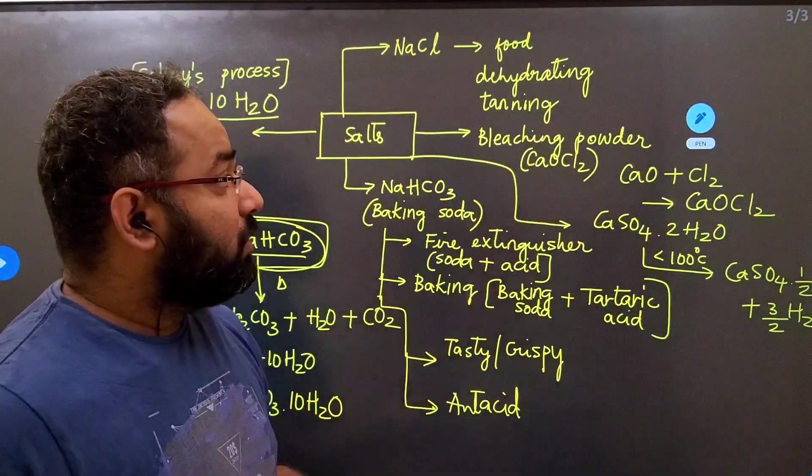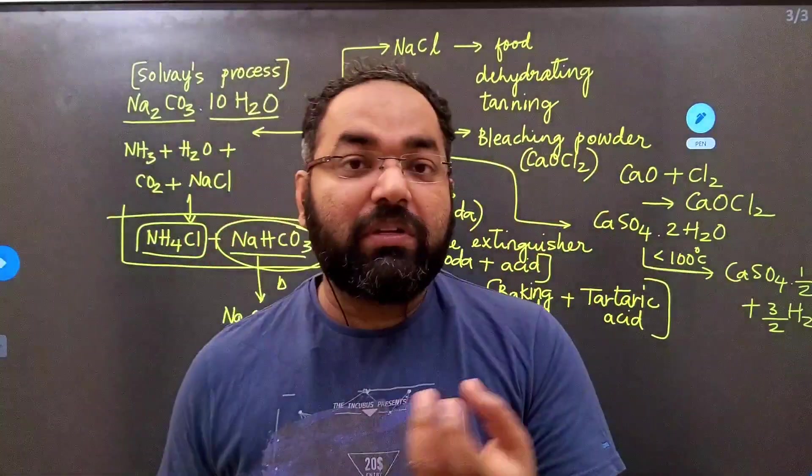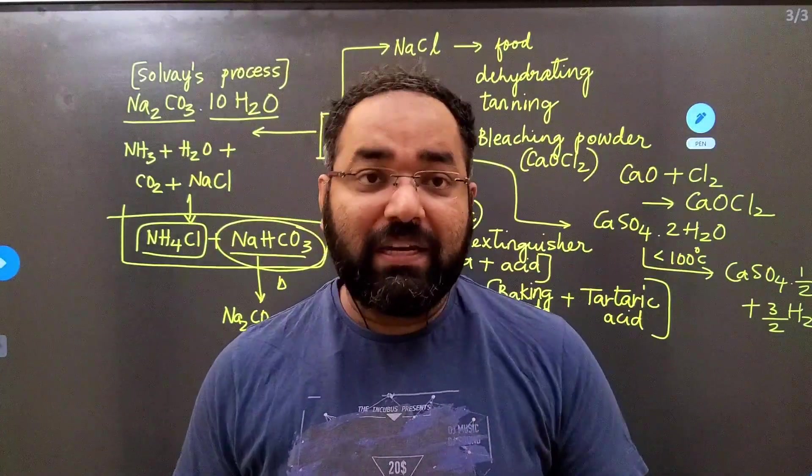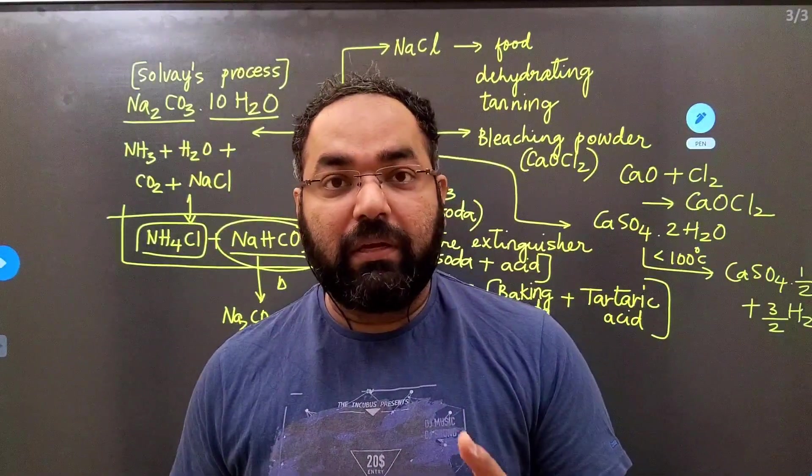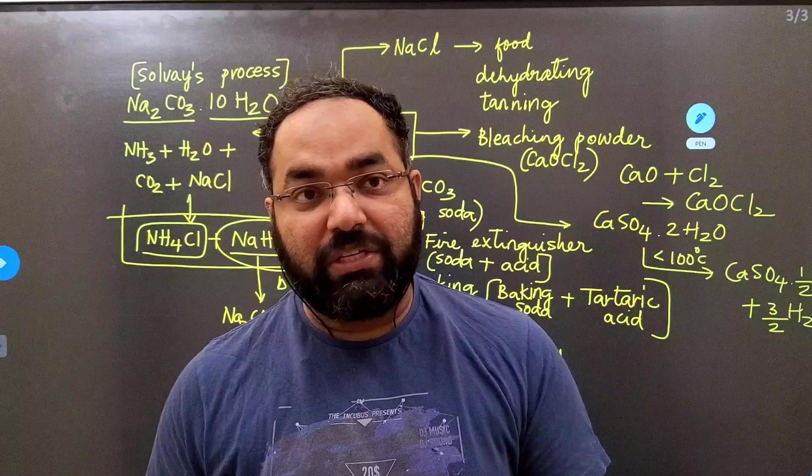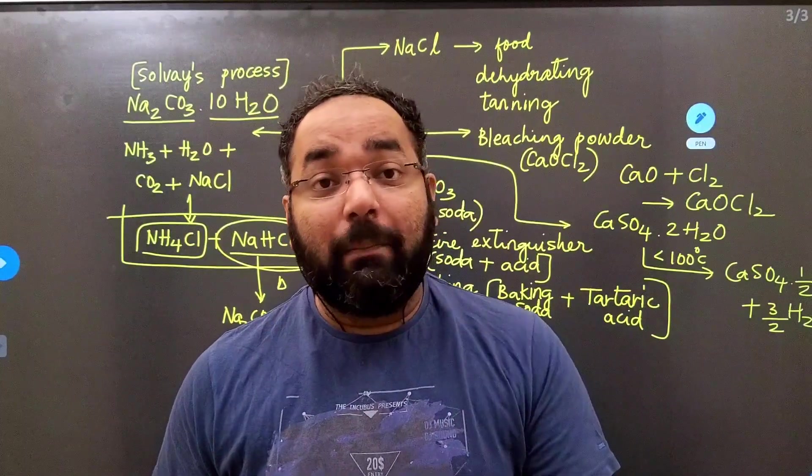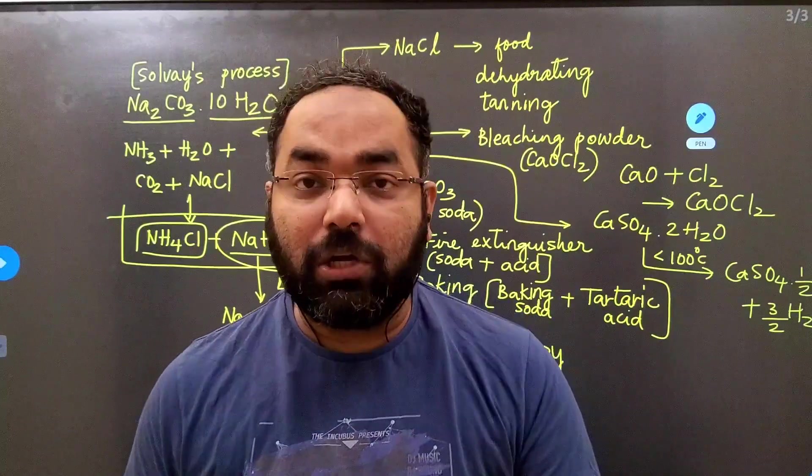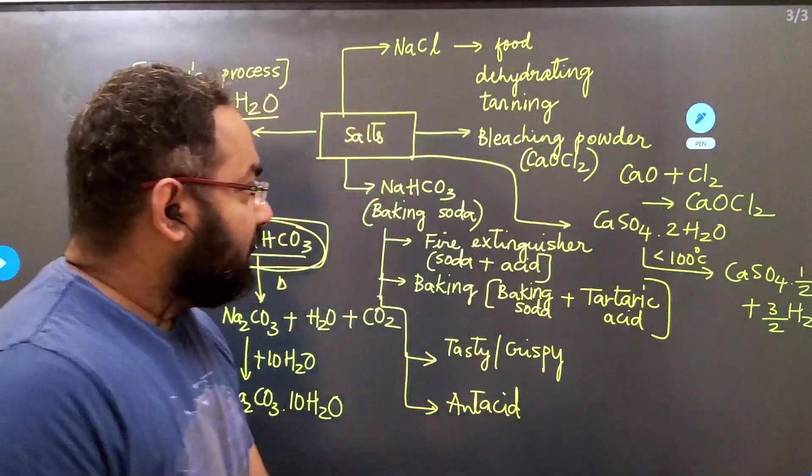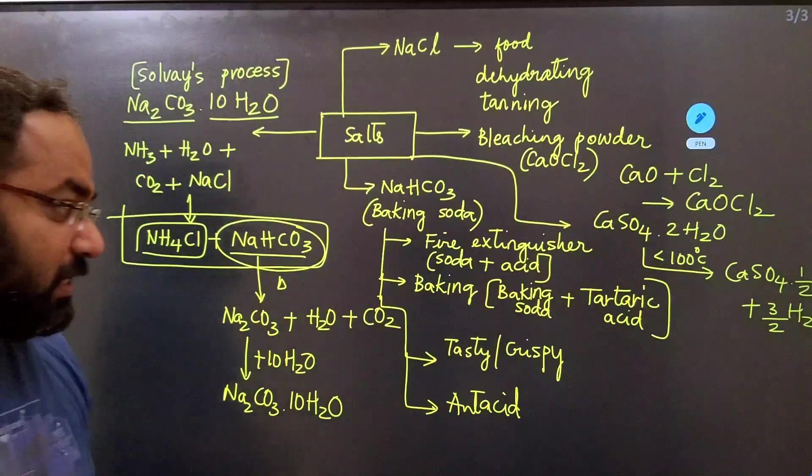We'll also quickly talk about the uses of bleaching powder. Bleaching powder is used to bleach clothes. As simple as that. Most important thing is it is also used as an oxidizing agent. Please remember, oxidizing agent is due to the presence of nascent oxygen in bleaching powder. Bleaching action is due to the presence of nascent chlorine. So with this, we have summarized all the salts as well.